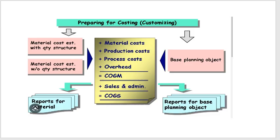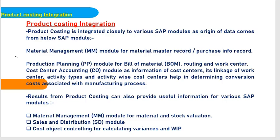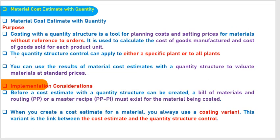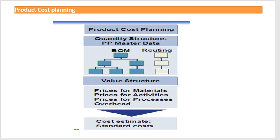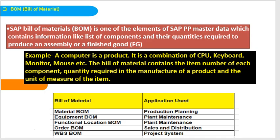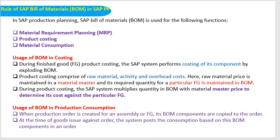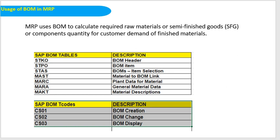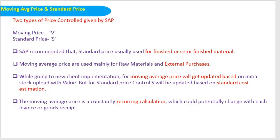So far, what we have discussed: what is product costing and the objectives of product costing, preparing for costing, broader casting integration, material cost estimate with quantity structure, what is product cost planning, costing variant, what is BOM and the role of SAP BOM in SAP PP module, usage of BOM in MRP, and the difference between moving average price and standard price.